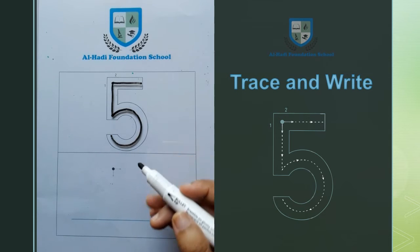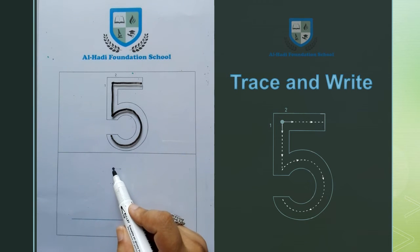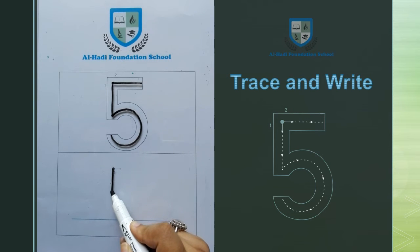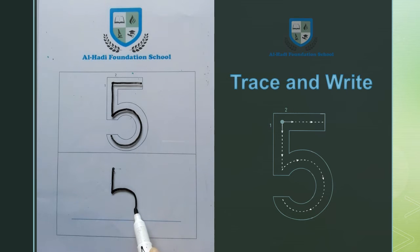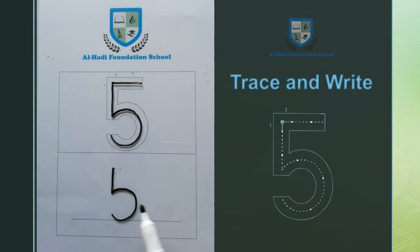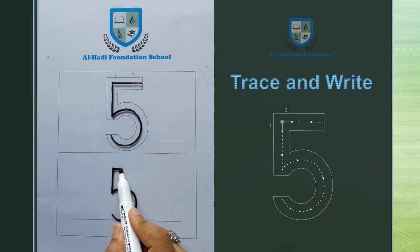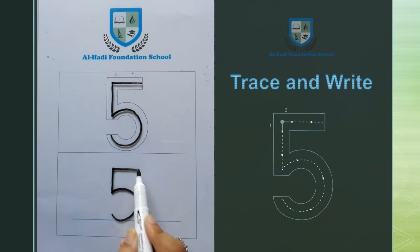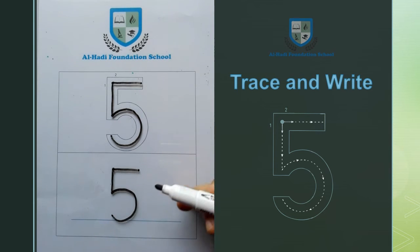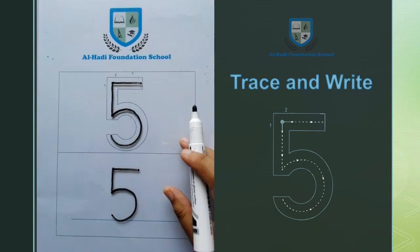Now we will learn to write 5. Keep the dots up to down and put a straight line on the right side. Then remove the pencil. Now keep the dots from left to right and put a straight line. We have traced the dots to write 5. To trace the dots or to write, we have to follow the dots.